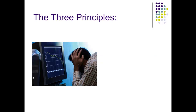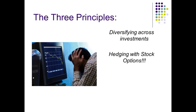Here are the three principles. The first one is probably obvious: diversifying across investments — you don't want to be invested all in one industry or all in one stock. The second principle is hedging, which you've probably heard of. It means that if the stock market goes down and you're hedged, you shouldn't have a huge loss. Traditionally, hedging means you're long on some stocks and short on others. I'm going to show you how to do that with stock options, which is really interesting.